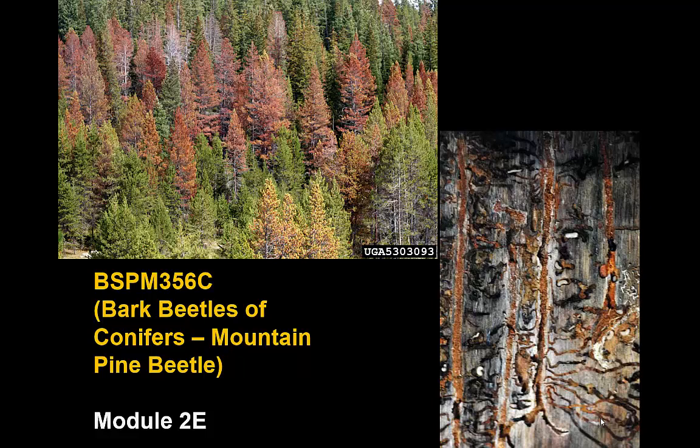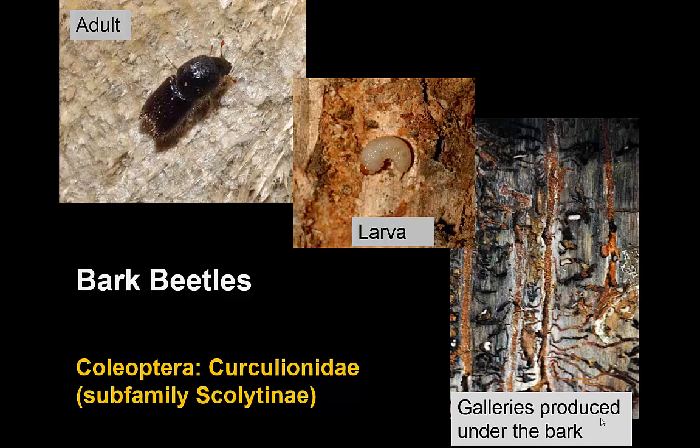We now need to talk about bark beetles, which brings up a group of insects that can have some very serious impacts on tree health. These include some of the insects most involved in the death of trees and, less commonly, some shrubs. We're going to start with the best known of the bark beetles on conifers — the mountain pine beetle — but first, bark beetles are a member of the family of weevils.